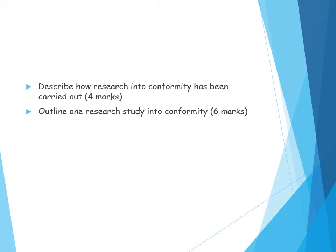'Outline one research study into conformity' — that is purely Asch's research, so you cover aims, procedure, findings, and conclusions for six marks. It's important that you have enough detail per key research study to give six marks' worth of AO1 detail.